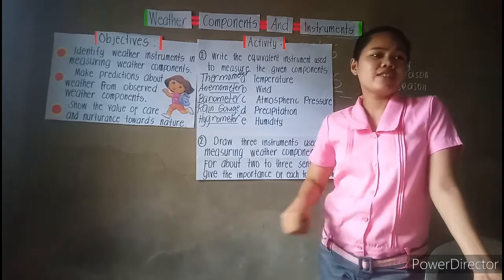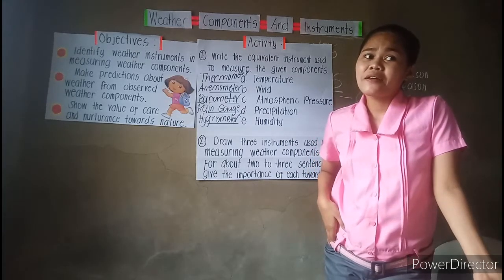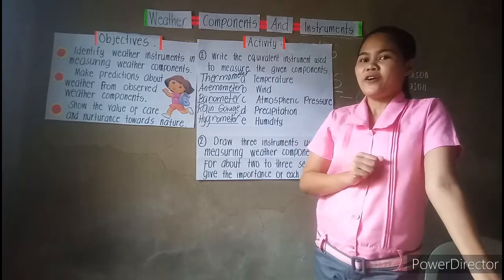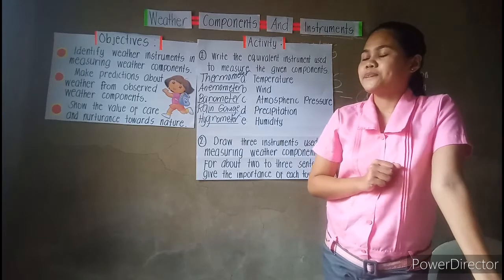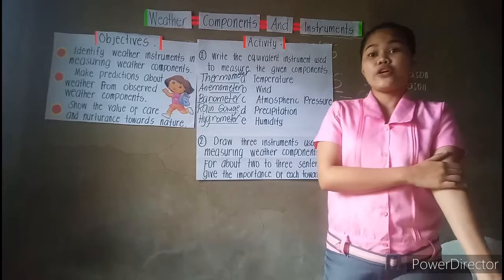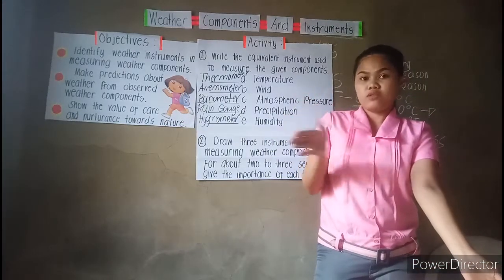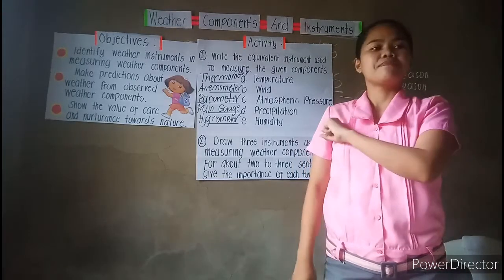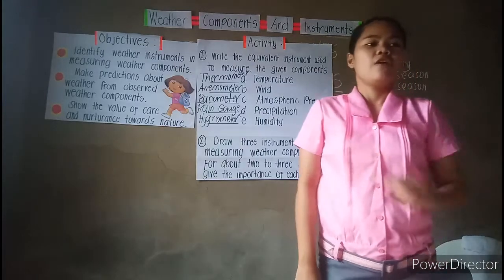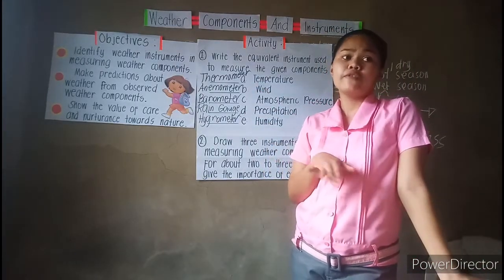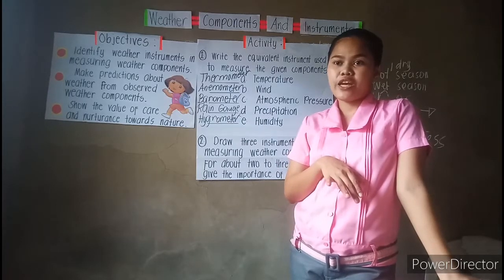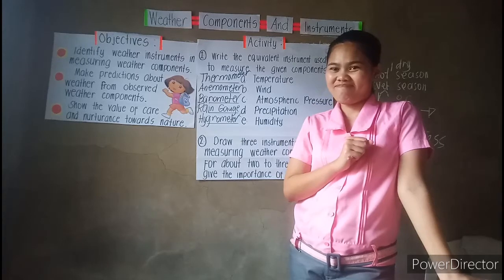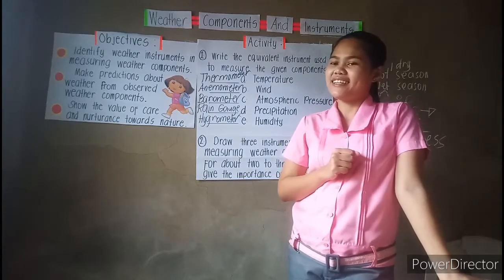Were you able to learn something class from our discussion today? RJ, what have you learned? That's correct — there are weather components, and most of those components have their specific instruments. Another one, Danica — very good. For us to minimize bad weather conditions, we have to take good care of our nature, because our nature contributes a lot towards our climate or our weather. My students are really brilliant!